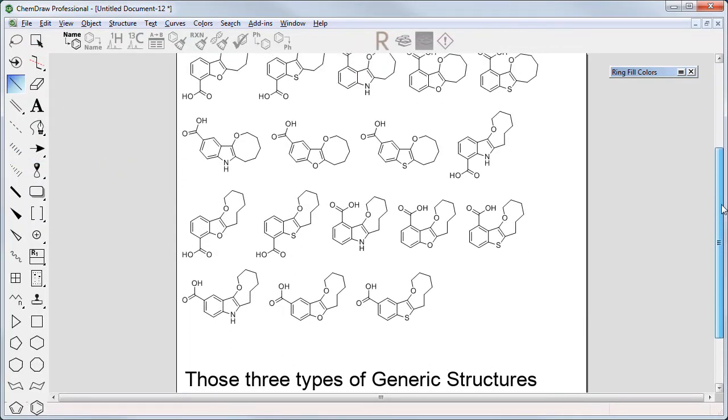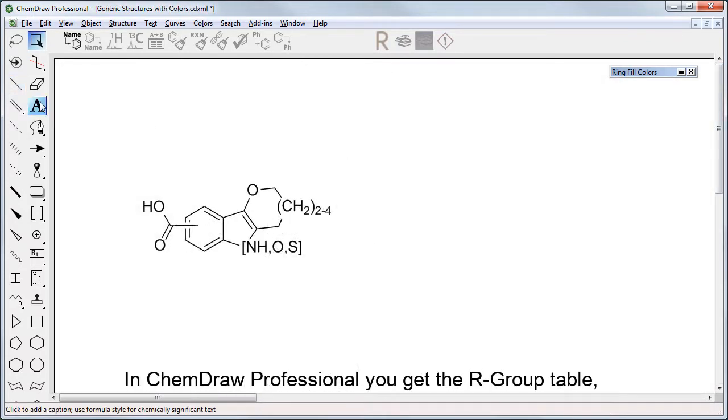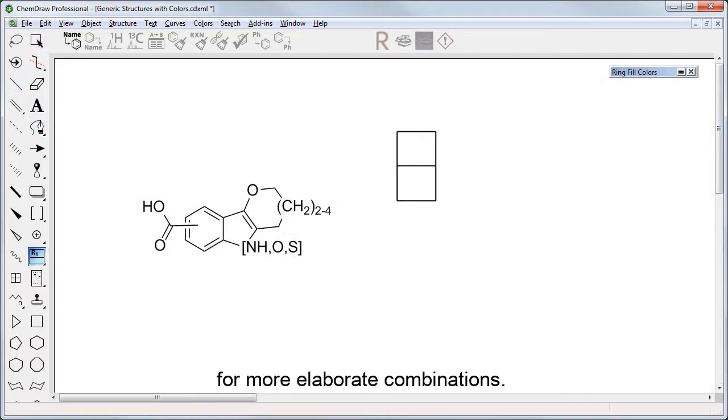Those three types of generic structures are available in ChemDraw Prime. In ChemDraw Professional, you get the R group table for more elaborate combinations.